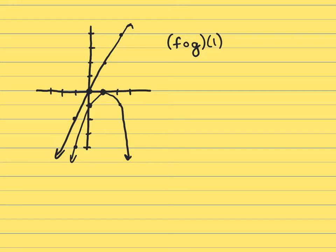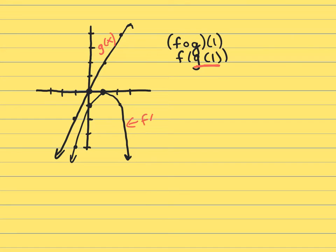The first thing I do is rewrite this as f of g of 1. I just like that format better. So what that says, I'm supposed to figure out what is g of 1. Well, this is the g of x graph here, and then this graph is f of x.